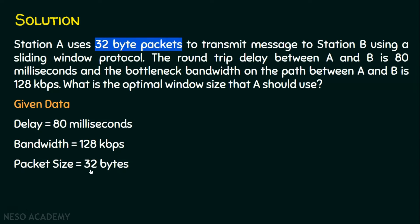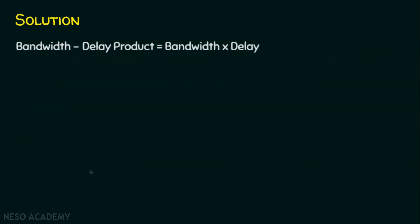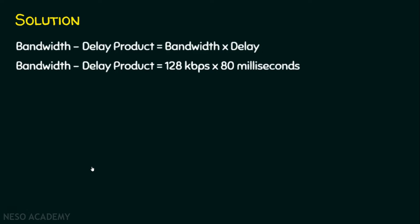We know the bandwidth-delay product is the product of bandwidth and delay. In the question, the bandwidth is 128 kilobits per second and the delay is 80 milliseconds. We need to find the bandwidth-delay product, which represents the capacity of the channel. We want bandwidth in bits and delay in seconds.